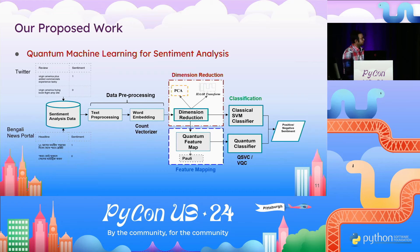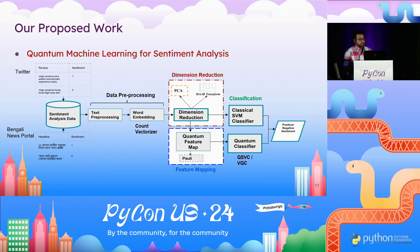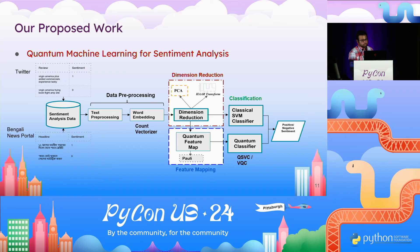This is our proposed framework. Starting from the left, we have the sentiment analysis datasets, which undergo text preprocessing and word embedding. The next step is dimension reduction using two methods: PCA and Haar transform. After that, the framework branches into two paths. The top path uses classical classification methods like a support vector machine. The bottom path uses quantum methods — a quantum feature map followed by a quantum classifier using the quantum support vector classifier and the variational quantum classifier. At the end, we compare both classical and quantum-classical paths.